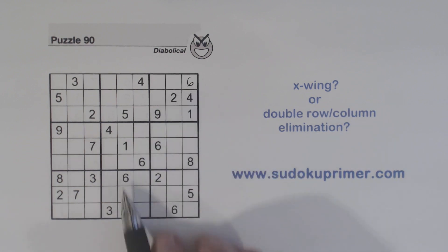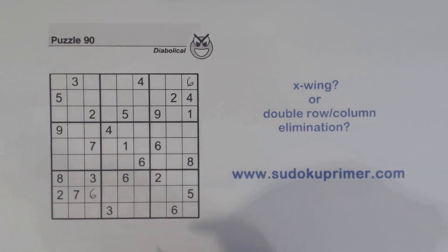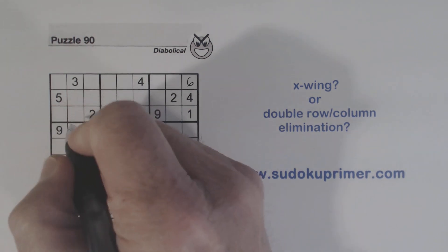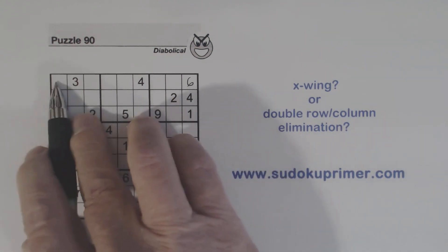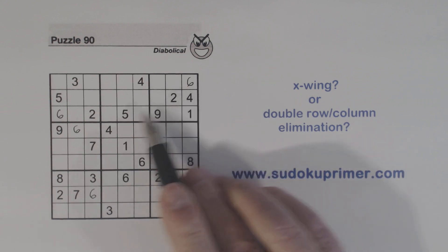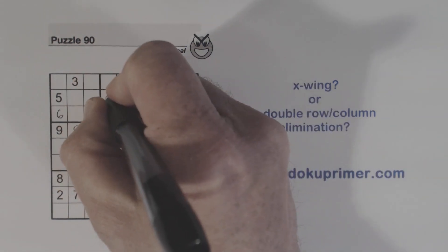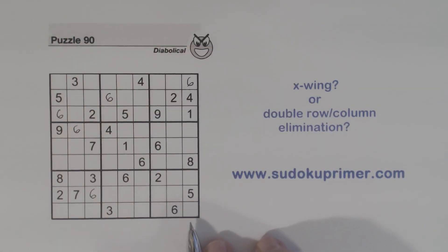We can probably fill in all the 6's here. There's a 6 right there, 6, 6, 6. And we've got a 6 and a 6 there, so that's a 6. And we've got 6 and 6 there, so that's a 6 right there. And that finishes the 6's for this puzzle.